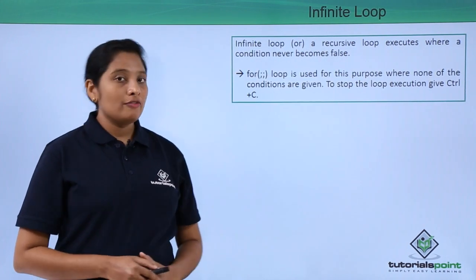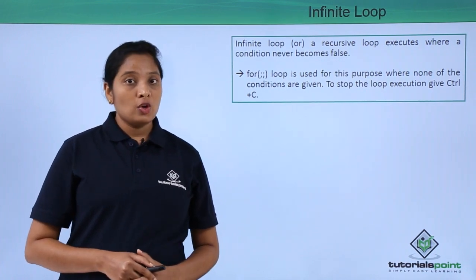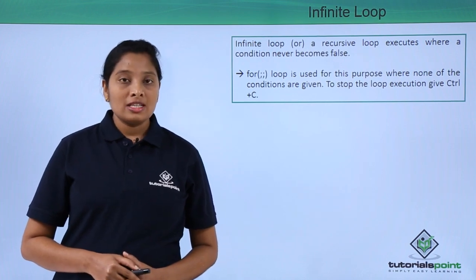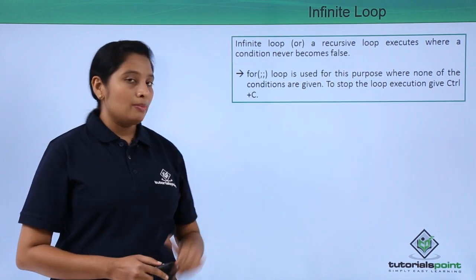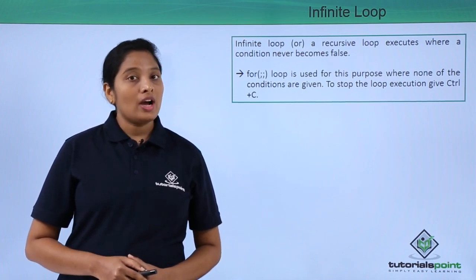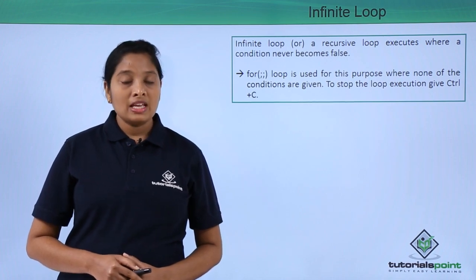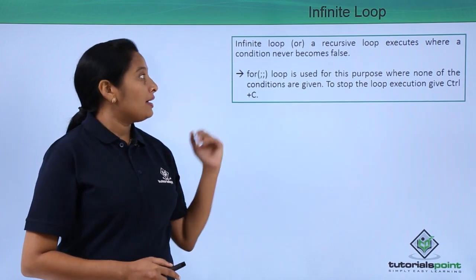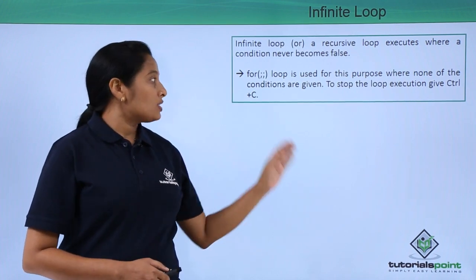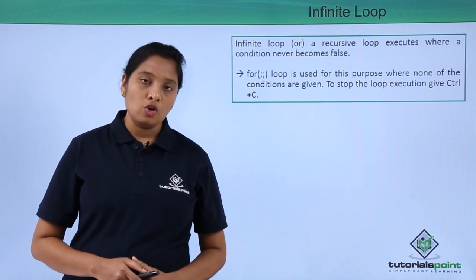Last is infinite loops. Infinite loops or recursive loops are executed where a condition never becomes false. For this you can use a for loop followed by two semicolons, which means there is no initialization, no condition, and no increment or decrement operators. This way we can implement an infinite loop. To control the infinite loop you have to use Ctrl+C, which will stop the execution.